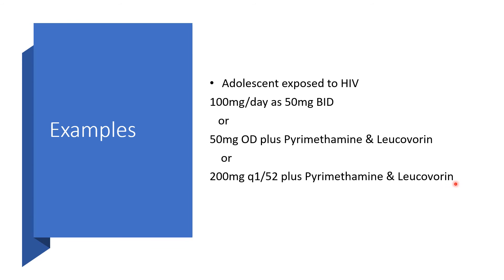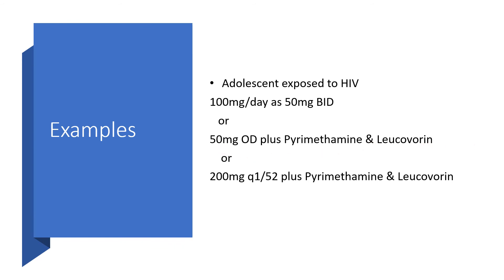If you really want to hit the HIV opportunistic infections hard — you don't want Pneumocystis jirovecii pneumonia or toxoplasmosis to knock the patient down — then go for triple medications: Dapsone, pyrimethamine, and leucovorin. For Toxoplasma gondii, use the combination of Dapsone with pyrimethamine and leucovorin; do not use Dapsone alone in Toxoplasma gondii positive patients.